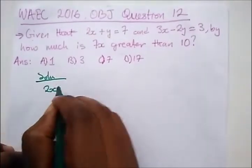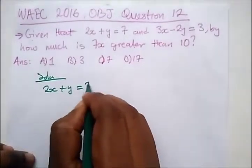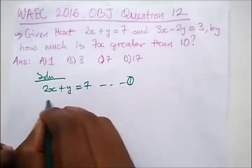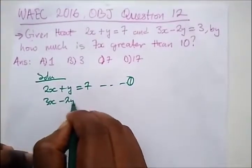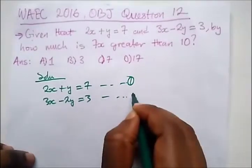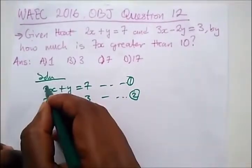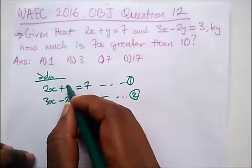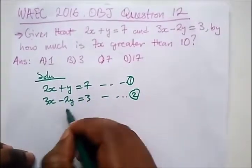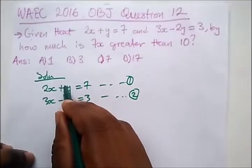two equations: 2x plus y equals 7 equation 1, 3x minus 2y equals 3 equation 2. Now we don't have the same coefficient of x or y. So let's say we're cancelling out y.